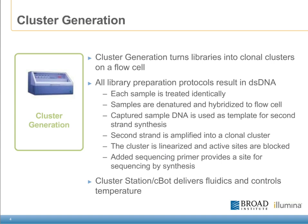Cluster generation turns the Illumina libraries into clonal clusters, which are bound to the surface of the flow cell. All library preparation protocols result in double-stranded DNA, and in the cluster generation process, each sample is treated identically. The samples are denatured and hybridized to the flow cell. The captured sample DNA is used as a template for second-strand synthesis to irreversibly bind the DNA to the surface of the flow cell.